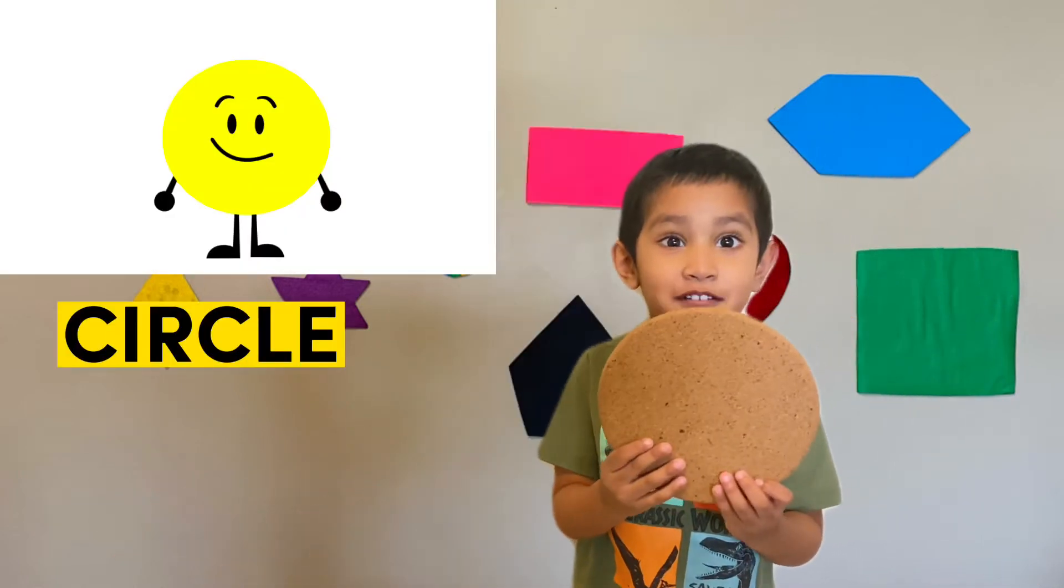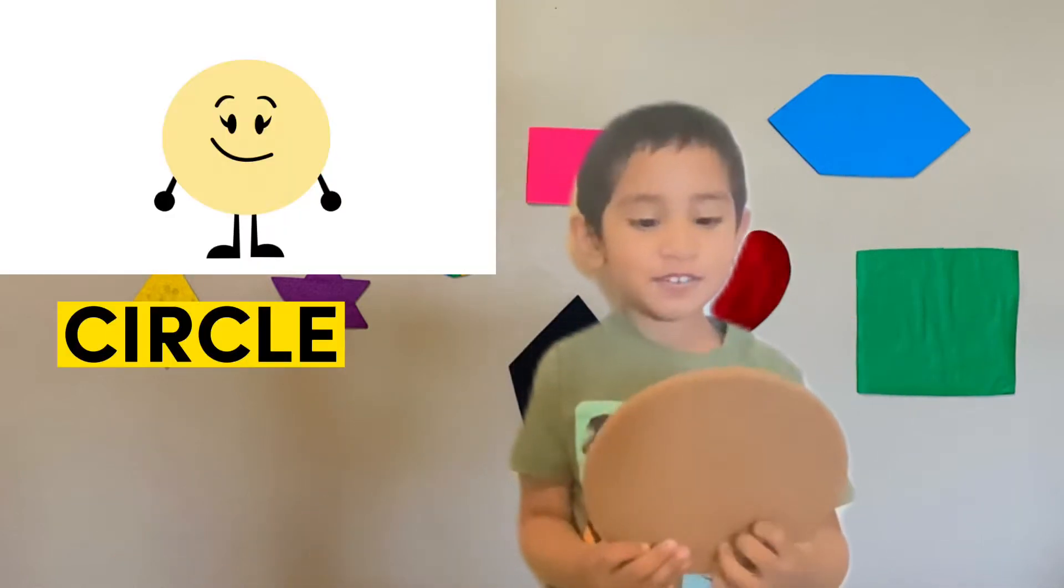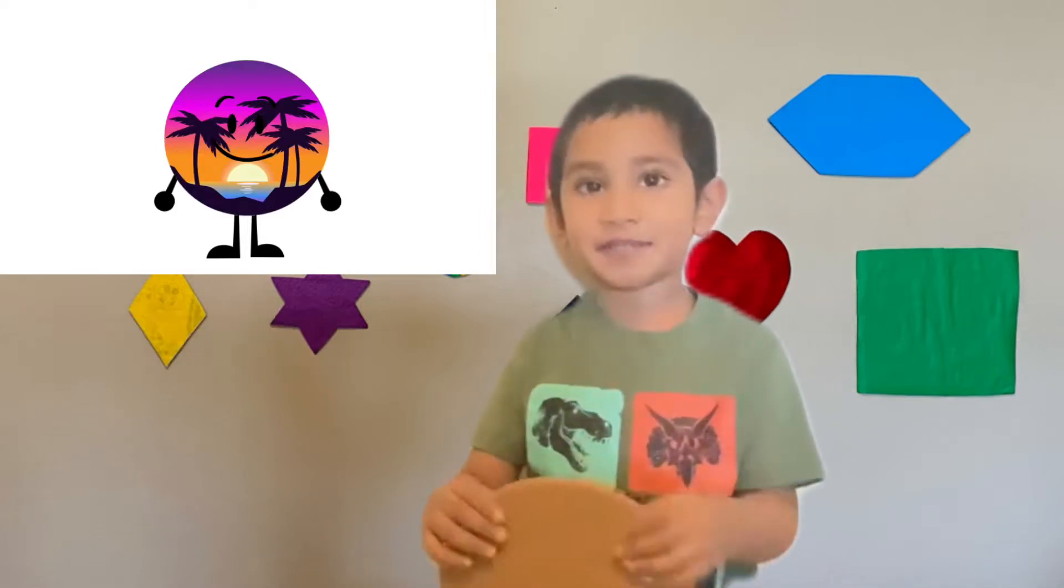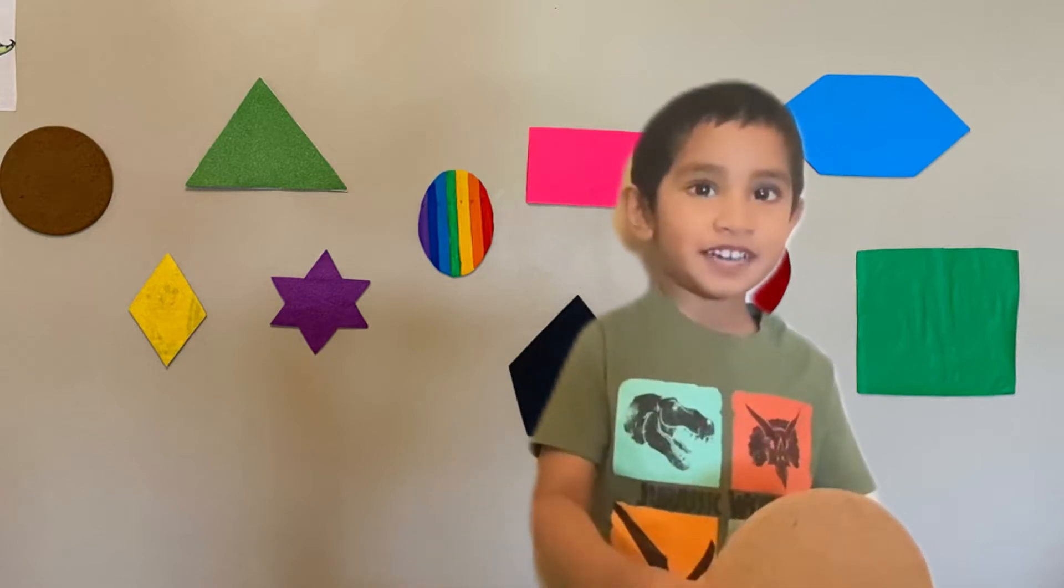Circle. This is a brown circle. Let's go round and round, round and round to the town.